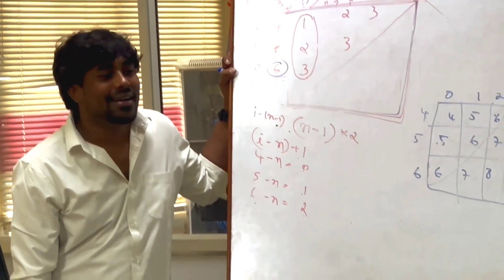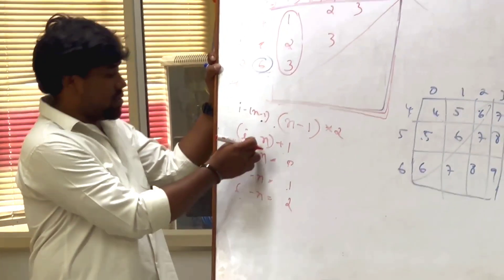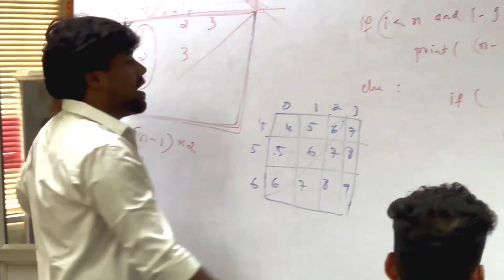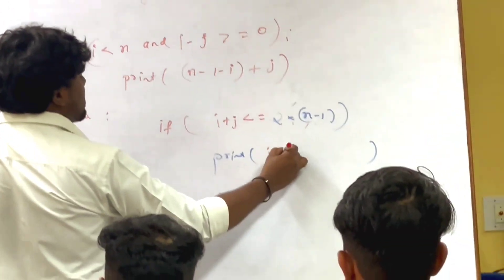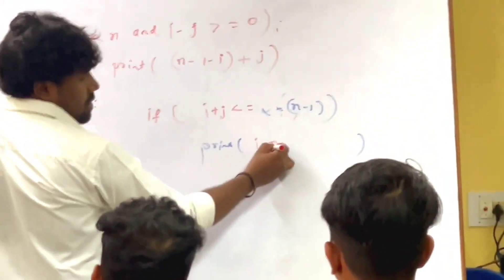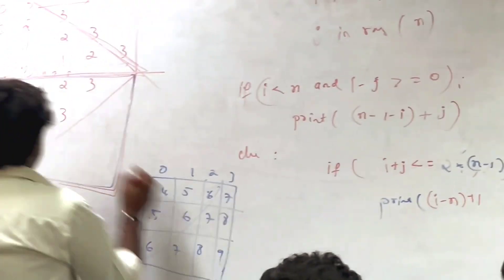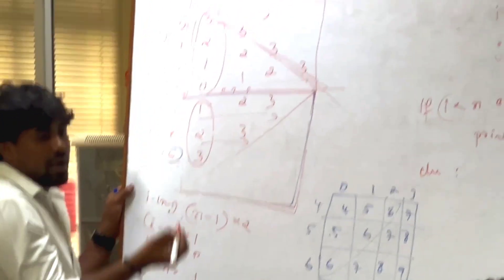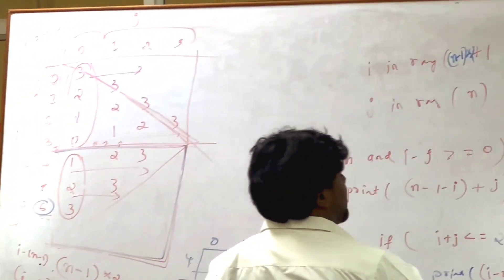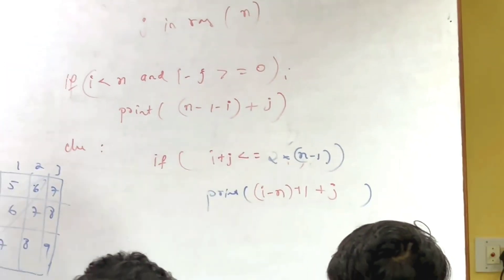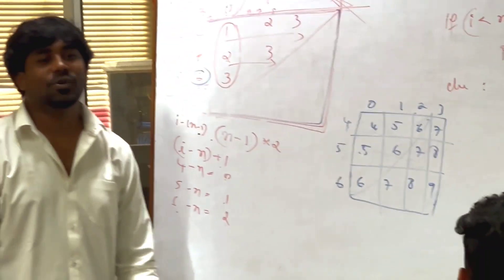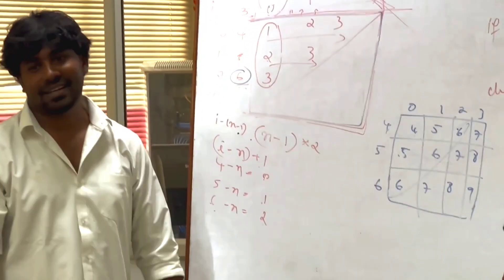Either I can use this one, or I can use the other one. I come here, I can use i minus n. i is 4 — 4 minus 4 is 0. I'll make it plus 1, I'll make it 1, 2, 3. Now it's increasing in this order — by 1 it is increasing. I will make it plus j. Is that okay for you? That's all. My program is done.